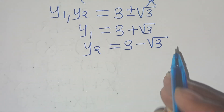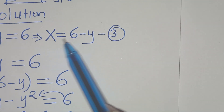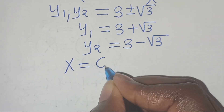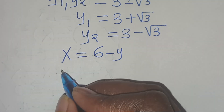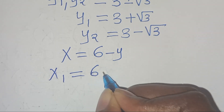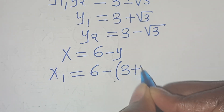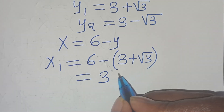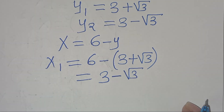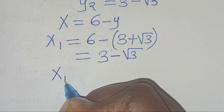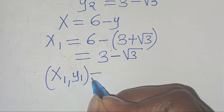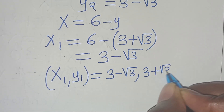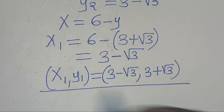Now let's find the corresponding values of x. From equation 3, x equals 6 minus y. So x1 equals 6 minus y1, which is 3 plus square root of 3. That gives 6 minus 3 minus square root of 3, which is 3 minus square root of 3. So the first set of solutions is: x1, y1 equals (3 minus square root of 3, 3 plus square root of 3).